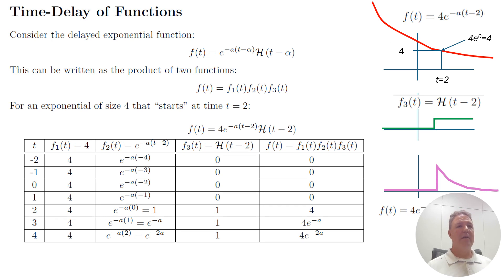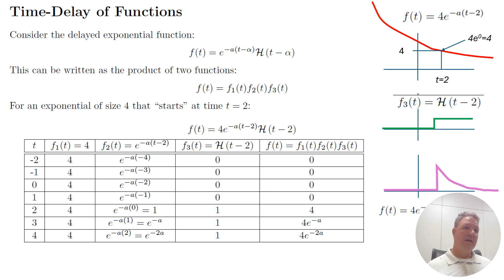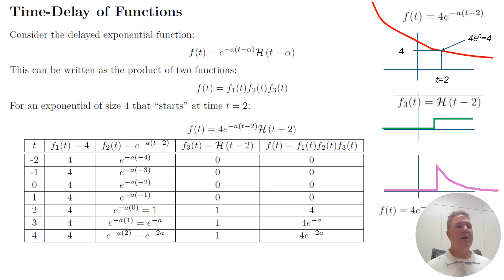If you want to time delay things, that's one of the advantages to writing a function as a product of different terms. When you see a t value, you just shift it by alpha to time delay something. For an example with e to the minus a times (t minus alpha), you shift the t in the exponential and you shift the t in the heaviside step. So you have a product: a sized exponential multiplied by the step that turns on at time two. This t minus two and this t minus two must match. You have this basic function, you size it and shift the time value — those are the two parameters to make the function bigger or smaller and move it from zero to some future time.